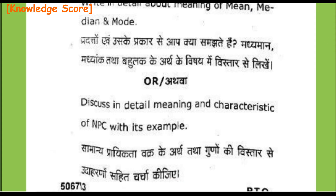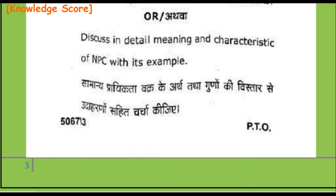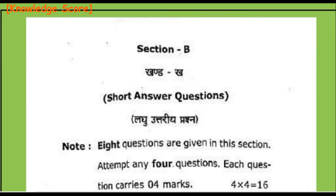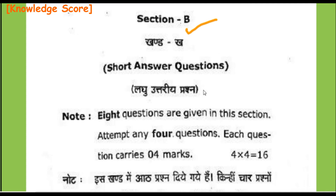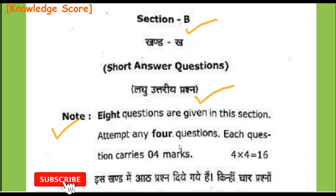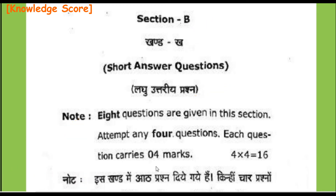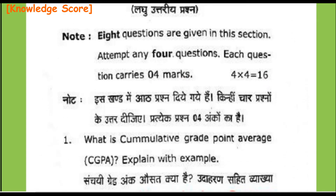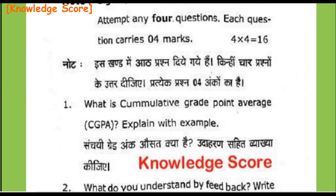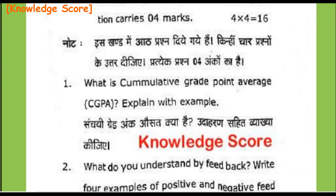Now we will discuss Section B — Aab hum Section B discuss karenge. Khand Kha: Short answer questions — Laghu utriya prashna. Note: 8 questions are given in this section. Attempt any 4 questions. Each question carries 4 marks. 4 into 4 equals 16. So Section B is of 16 marks.